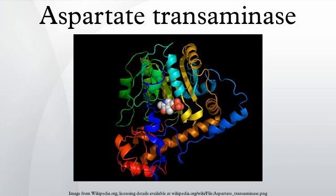The amino group transfer catalyzed by this enzyme is crucial in both amino acid degradation and biosynthesis. In amino acid degradation, following the conversion of alpha-ketoglutarate to glutamate, glutamate subsequently undergoes oxidative deamination to form ammonium ions, which are excreted as urea. In the reverse reaction, aspartate may be synthesized from oxaloacetate, which is a key intermediate in the citric acid cycle.